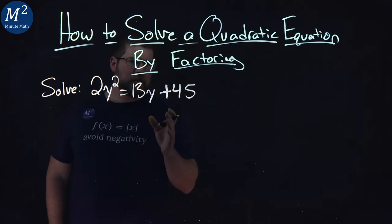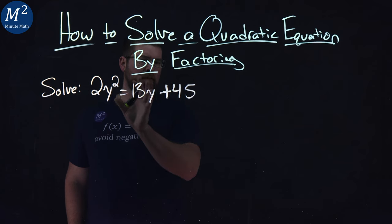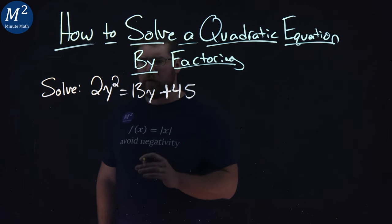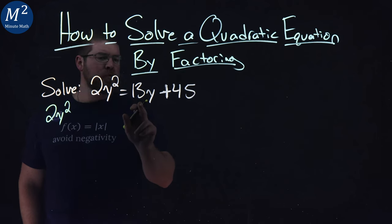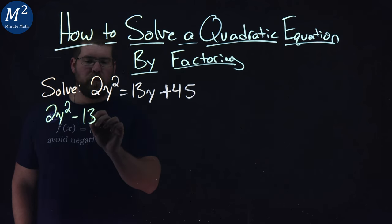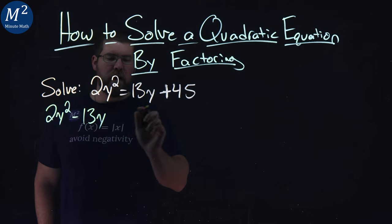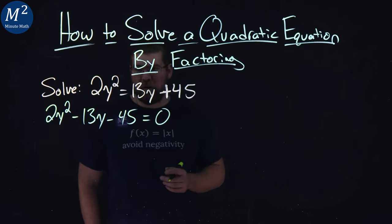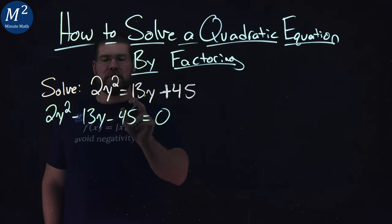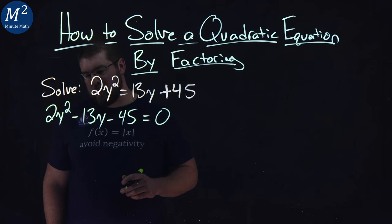To factor, we have to get this polynomial equal to zero. So I have 2y squared, I'll rewrite it here, but I'm going to subtract 13y from both sides and subtract 45 from both sides, leaving it equal to zero.